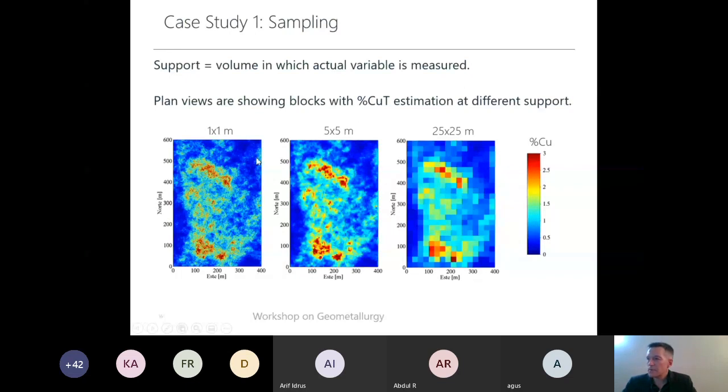For instance, plan views showing the same block model for total copper estimation. The only difference is the size of the block: one by one, five by five, and finally 25 by 25 meters. What is the conclusion here? What about the variability? The larger the support, the lesser the variance. Support is very important to recognize the variance of a parameter.